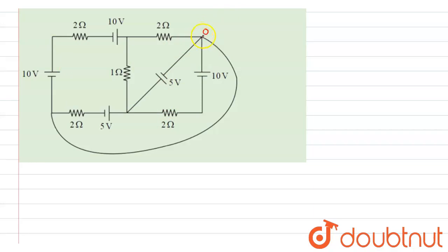What we do here is take the potential of this point as zero. Why? Because it is connected with a connecting wire. So if we take zero voltage here, there will also be zero voltage here. If we cross this battery, there will be a voltage of 5 here.